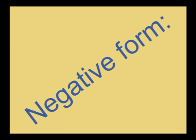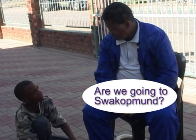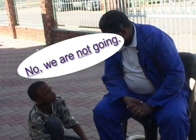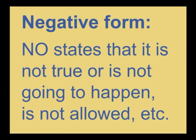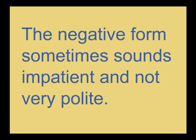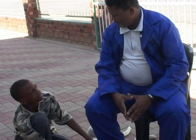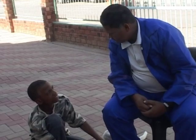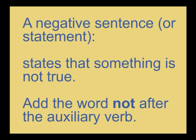Finally, let's look at the negative form. Are we going to Shwakamundi? No, my son, we are not going to Shwakamundi. With the negative form, 'no' states that it is not true or it's not going to happen, it is not allowed, and so on. The negative form sometimes sounds impatient and not very polite. A negative sentence or statement states that something is not true. Add the word 'not' after the auxiliary verb.